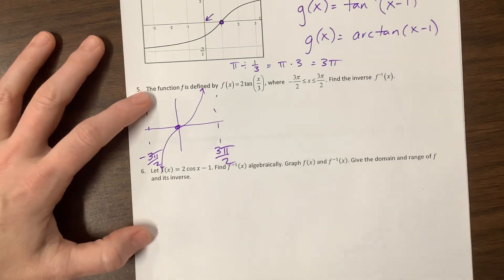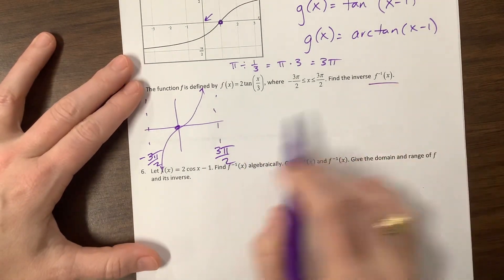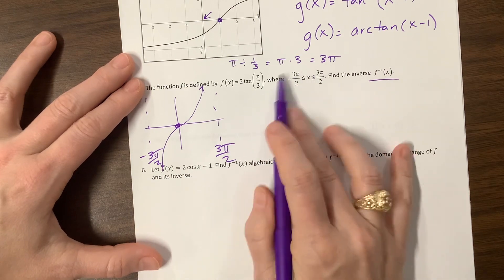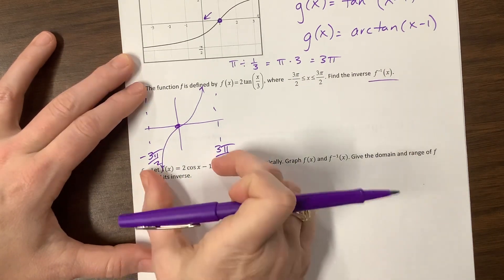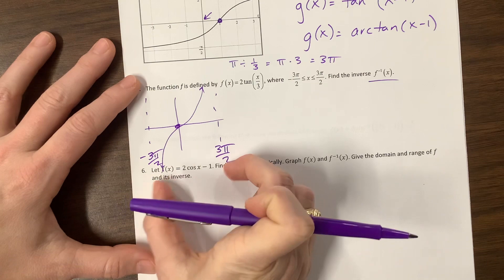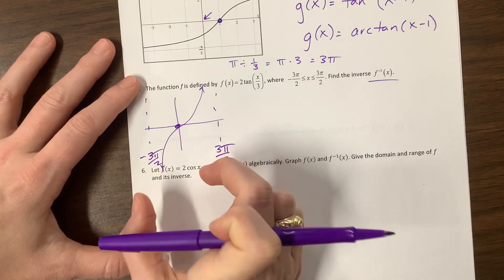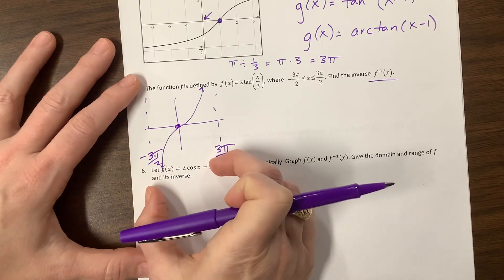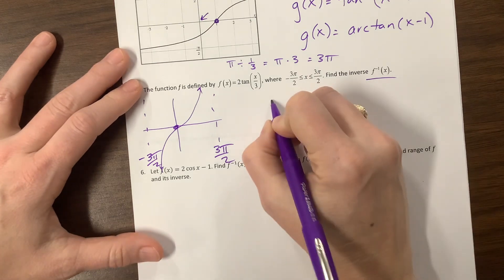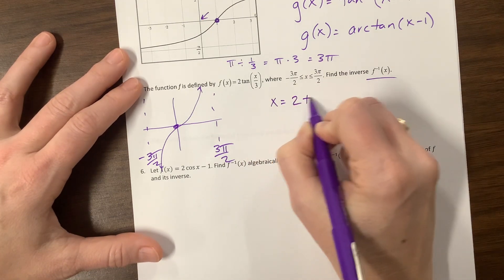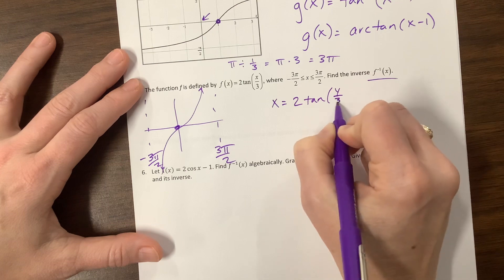Okay, I haven't even answered the question they asked. They said find the inverse, but so basically, when they're restricting this domain, they're just keeping me within, keeping it to one period of it so that when we take its inverse, its inverse will be a function. All right, so switch x and y. x equals 2 tangent of y over 3, divide by 2.